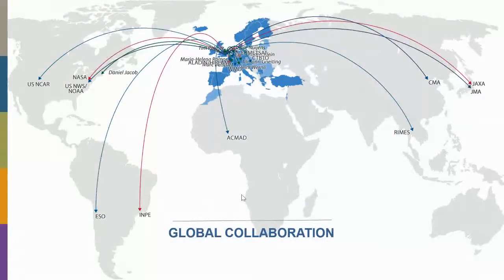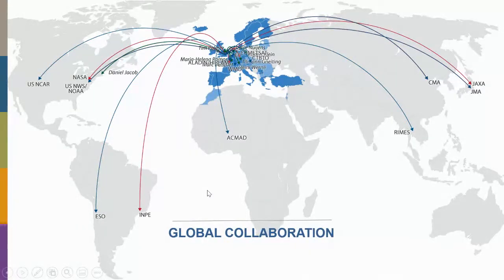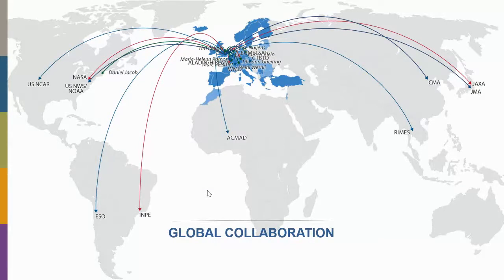If you make global predictions, you can't do this on your own. We have a lot of global collaborations with different countries and met services all over the world. This first of all guarantees that we get data and observations into ECMWF, but also in terms of building cutting-edge systems, you really need scientific collaboration basically all over the globe, working together with the brightest minds in different countries.